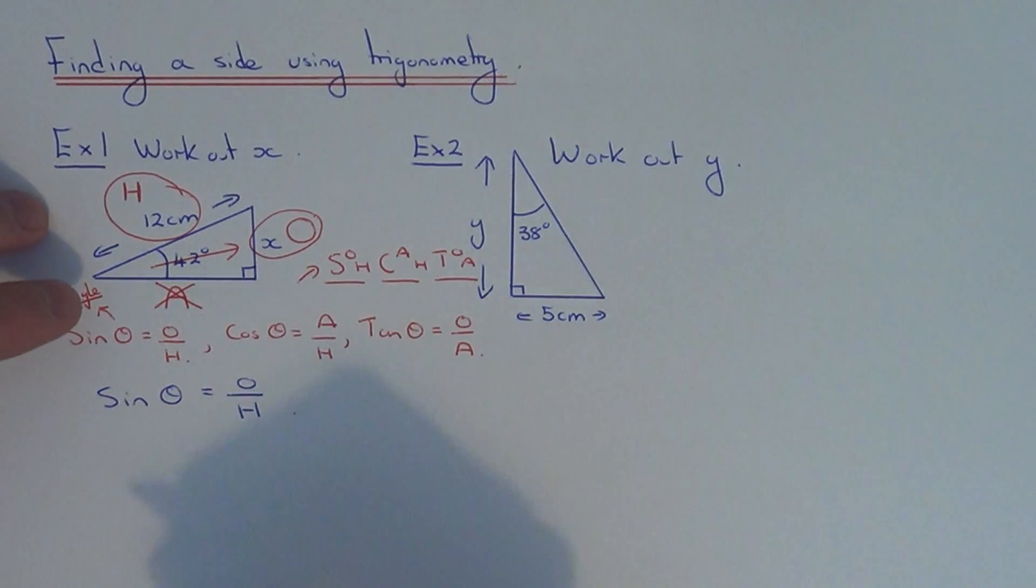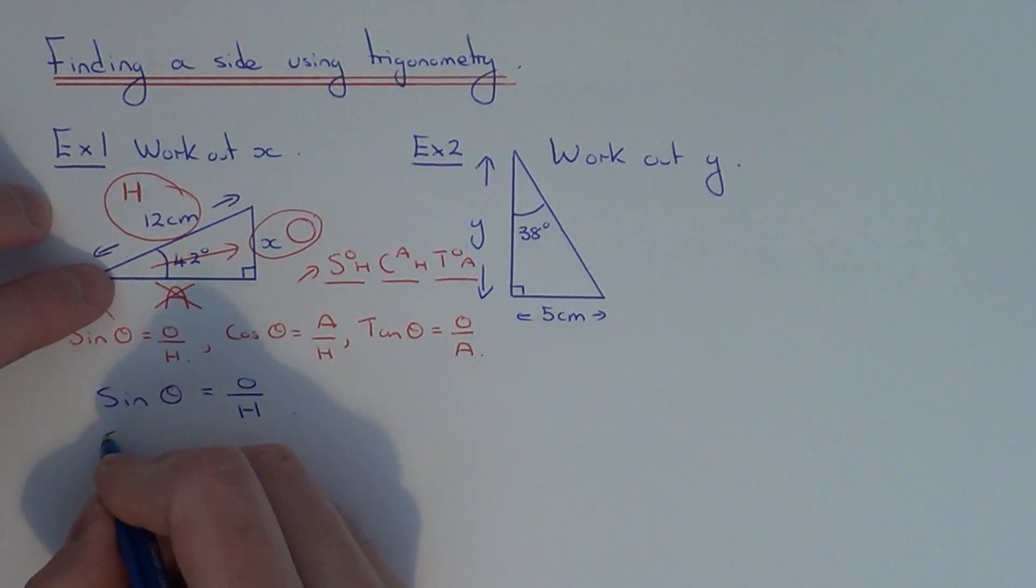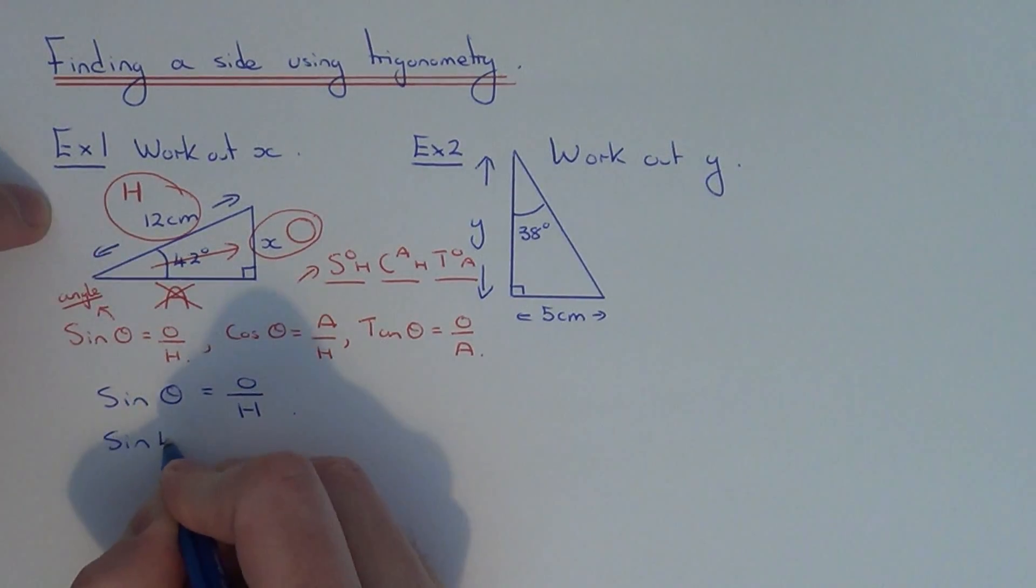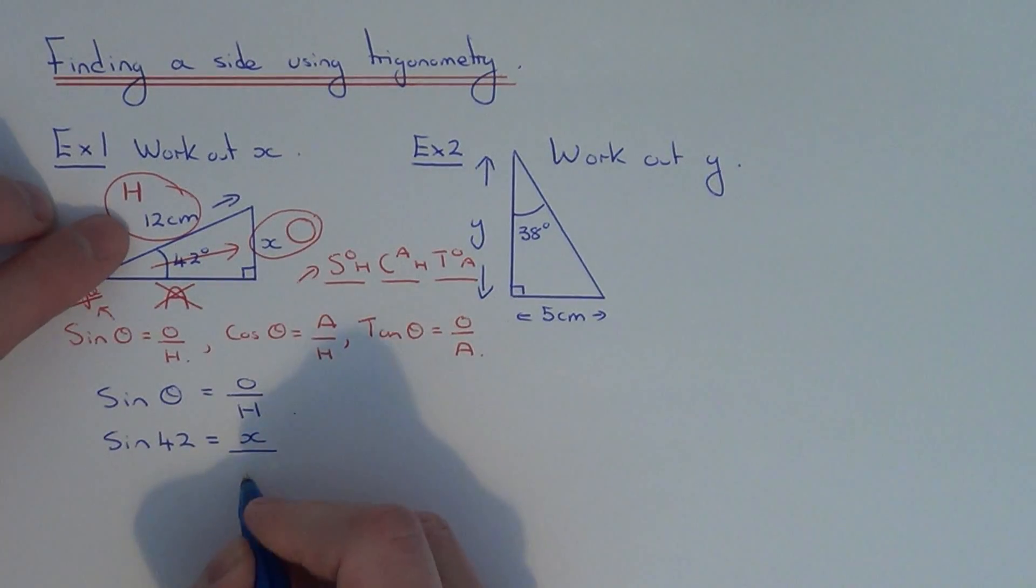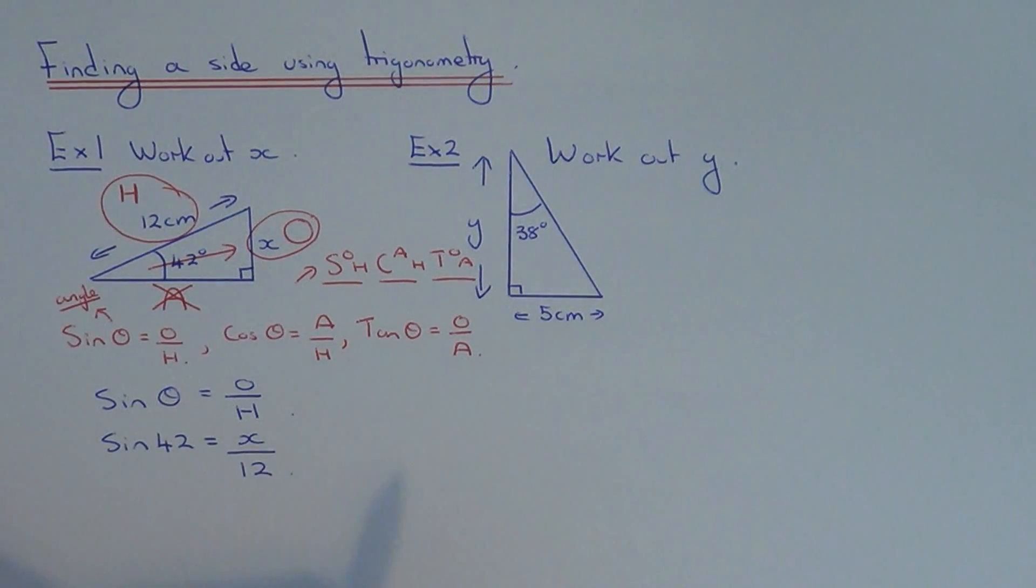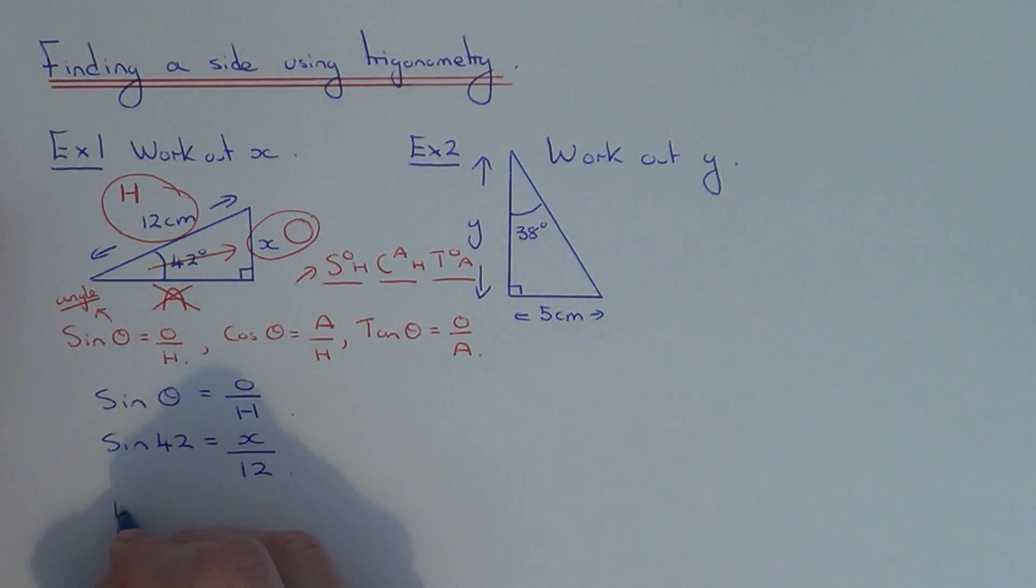If we substitute our values into the formula: sin θ is 42, the opposite is x, and the hypotenuse is 12. So what we have to do is work out x, but we've got this divide by 12 on the right hand side, so we need to get rid of the divide 12. I do that by multiplying the other side by 12. So we get 12 times sin 42 equals x.